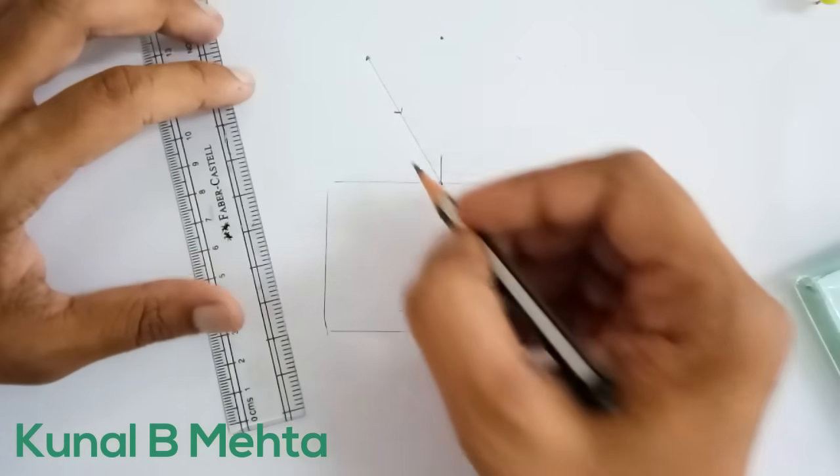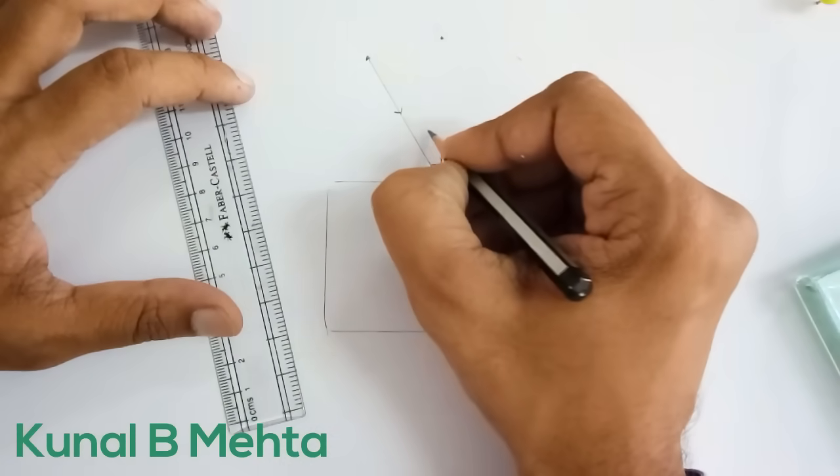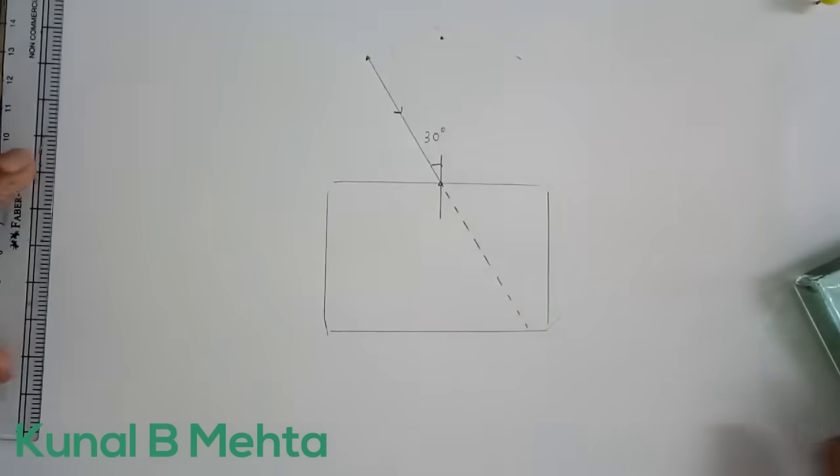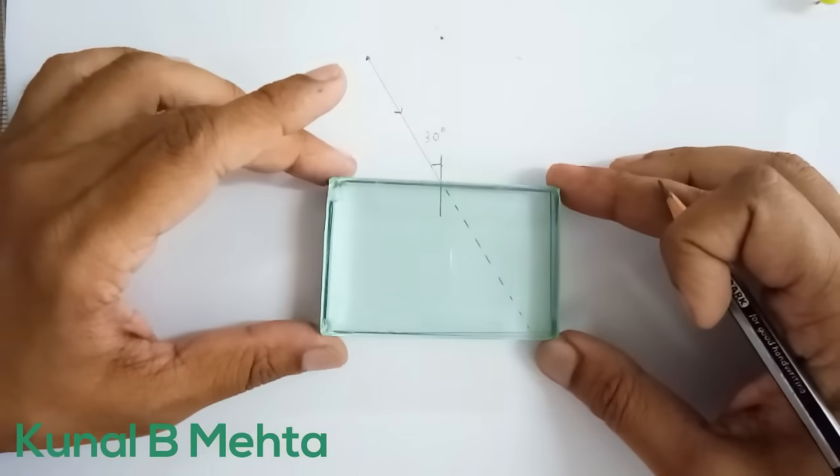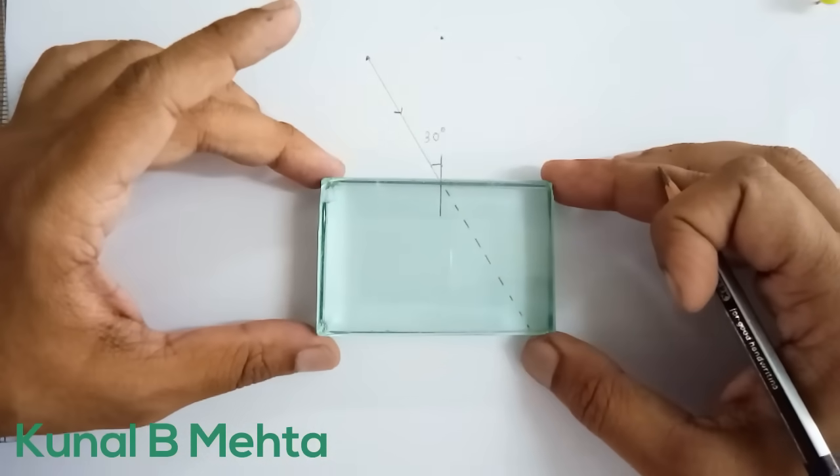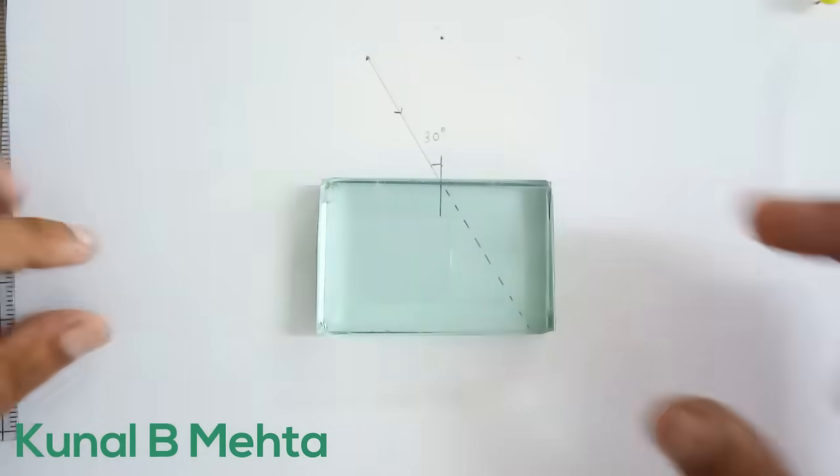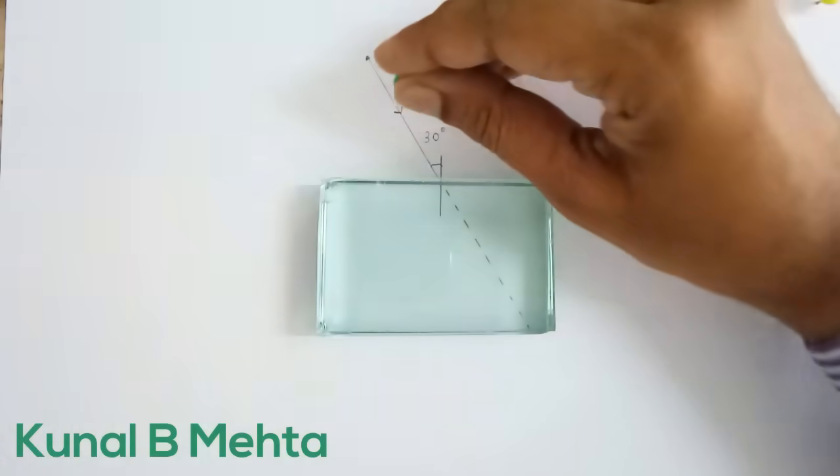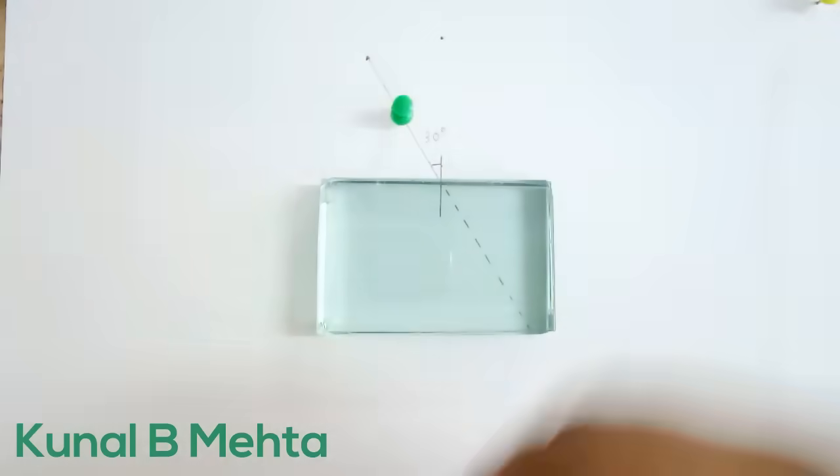Now this angle is the angle of incidence and we know that this is 30 degree. Now what am I going to do is I am going to put back the glass slab like this properly placed. Now I will be needing another four softboard pins and I am going to attach them on this incident ray.